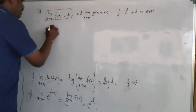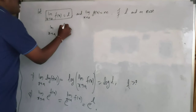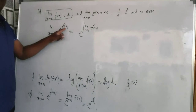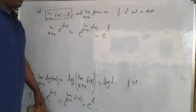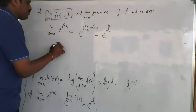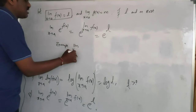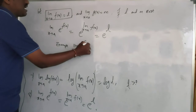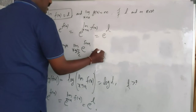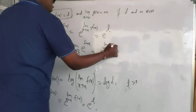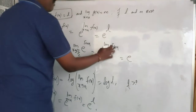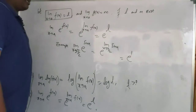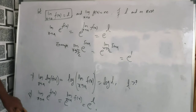A final property: limit extending to a of e^f(x). Whenever you have this, we can write it as e to the power of limit extending to a of f(x), so the limit goes to the exponent and we get e^l. For example, limit extending to π/2 of e^sin x equals e to the power of limit extending to π/2 of sin x, which is e^(sin π/2) = e^1 = e.